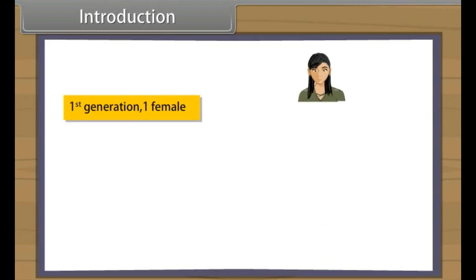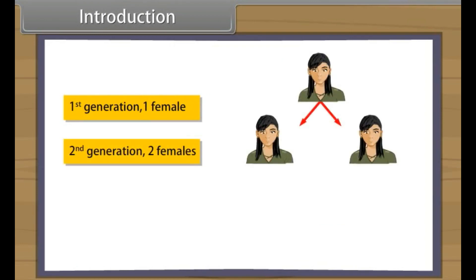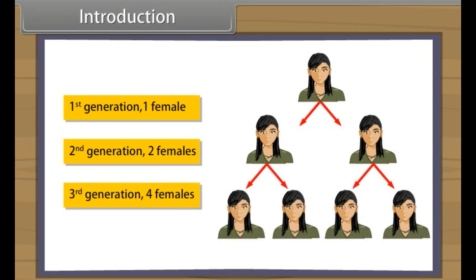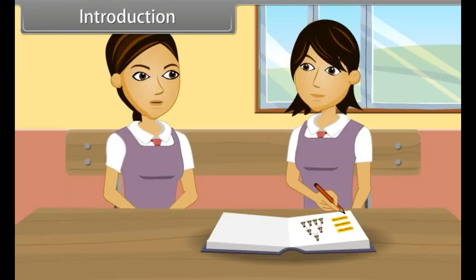First generation: one female. Second generation: two females. Third generation: four females. Wow, that was so simple. Do you know what we call such progressions? Such a progression is a geometric progression. Come, I will tell you more about this.